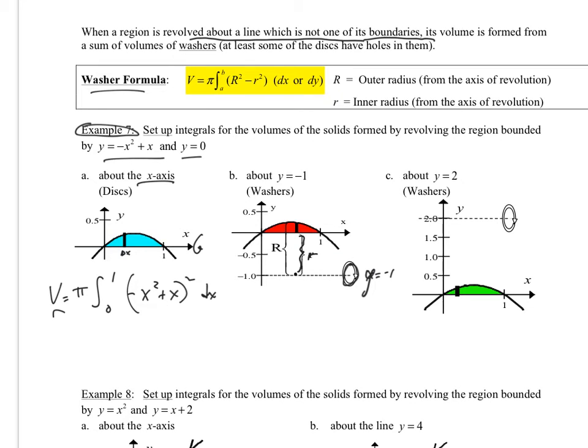The little r is the gap that we do have. The big r is the outside edge to the axis of rotation. Any r has to be drawn to the axis of rotation.